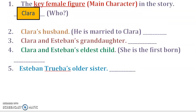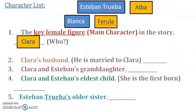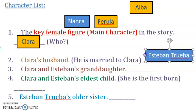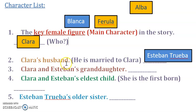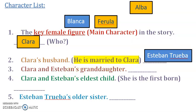Countdown in three, two, one. He is Clara's husband — who is he? He is Esteban Truba. Clara's husband means he is married to Clara.